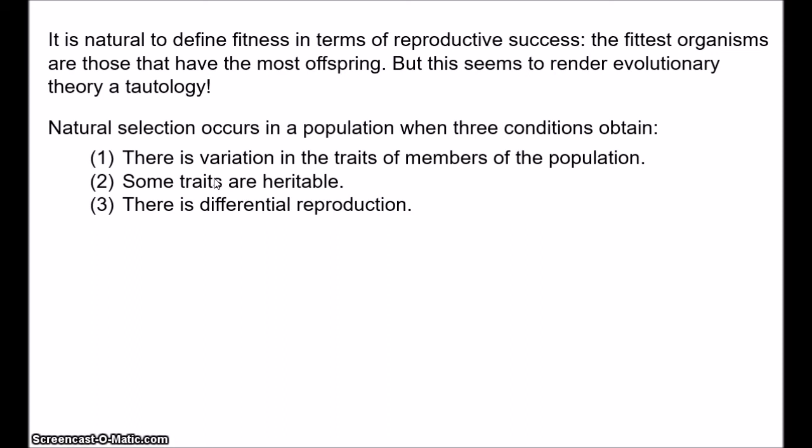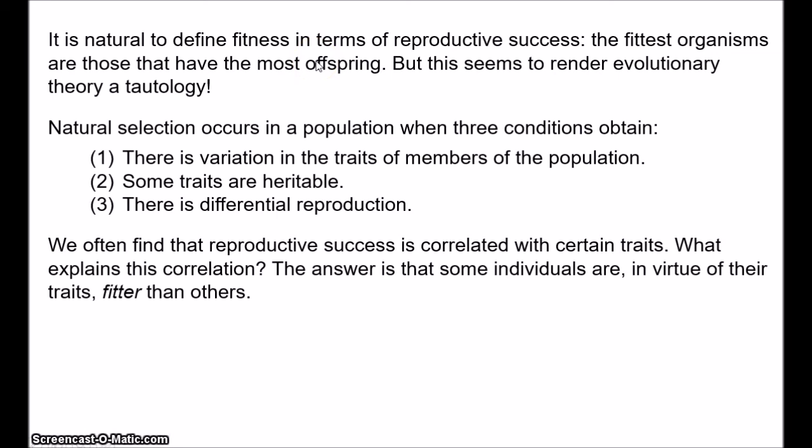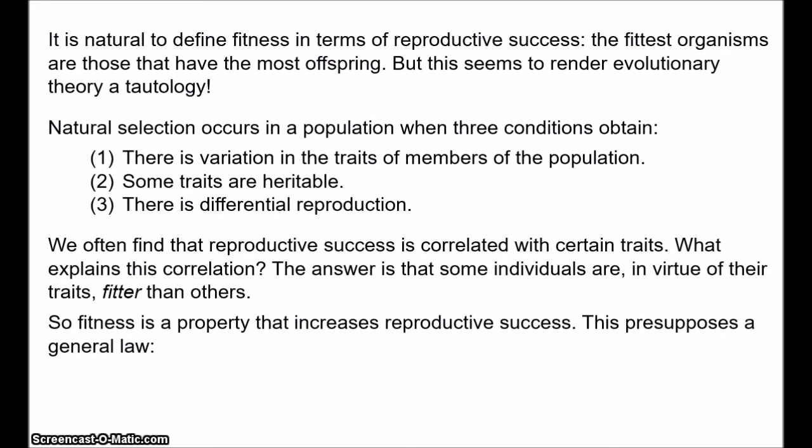Reproductive success is simply the actual number of offspring. One organism is more reproductively successful than another if it has more offspring. When we examine the natural world, we find that reproductive success is correlated with certain traits — for example, that dark-coloured moths have more offspring than light-coloured moths. The answer given by Darwinian theory is because of a struggle for existence, and certain individuals are, in virtue of their traits, fitter or better adapted to their environments. We have a property — fitness or adaptedness — and this property increases the probability of reproductive success. The answer to why organisms with trait X have more offspring is that trait X promotes fitness.